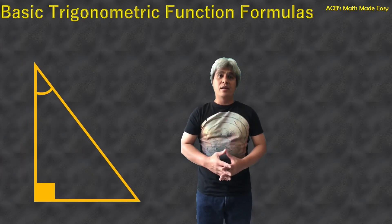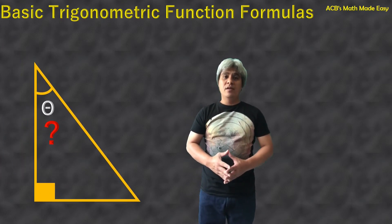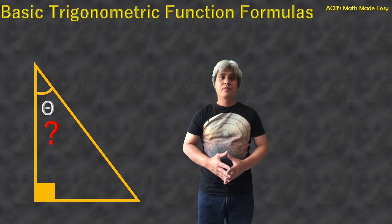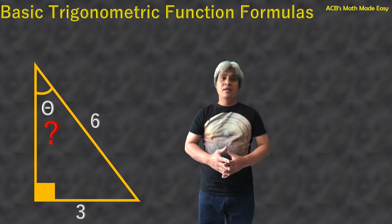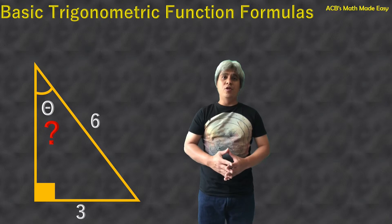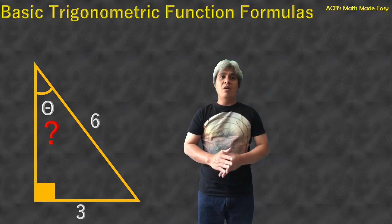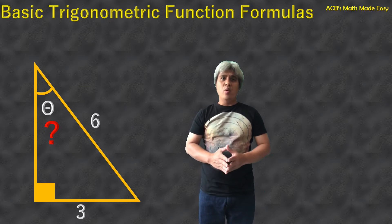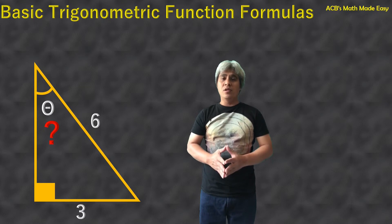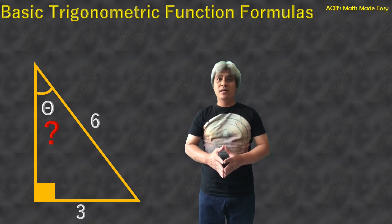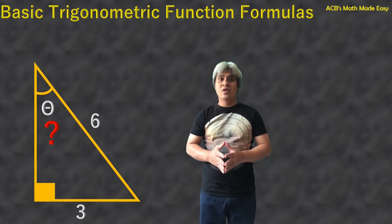This is the right triangle, and we are going to calculate the angle theta. The hypotenuse of the right triangle is 6 units, and the opposite of the angle theta is 3 units. How are we going to get this angle? What is the trigonometric function formula that deals with opposite and hypotenuse? If you haven't watched my video on the basic trigonometric function formulas, I suggest watching it first so you will not get lost and then come back here.